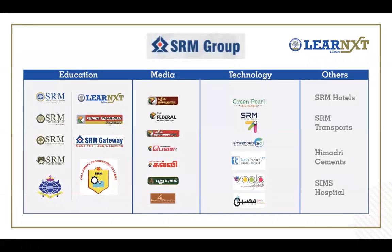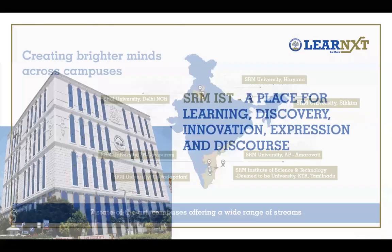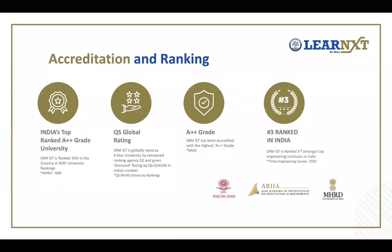SRM group has segments in education, media, technology, and others. SRM university has campuses across the country. SRM Chennai is one of the best in the country, rated rank one in some rankings, with an A++ grade — one of the most prestigious universities in the country. We have trained thousands of students, with a strong advisory board, MOUs, and patents that prove our competencies in teaching students.